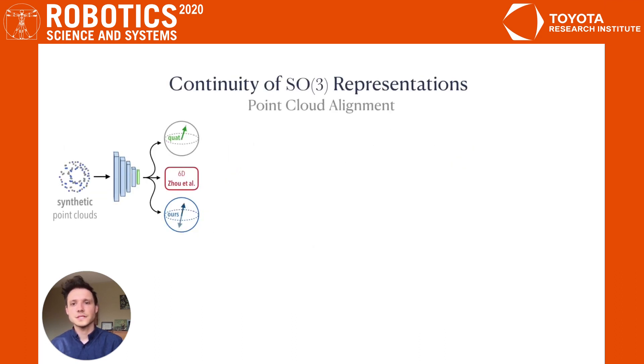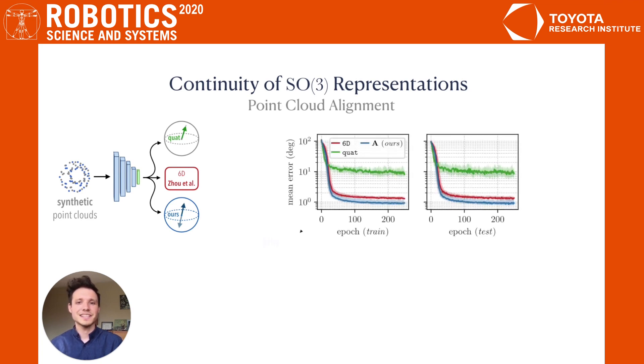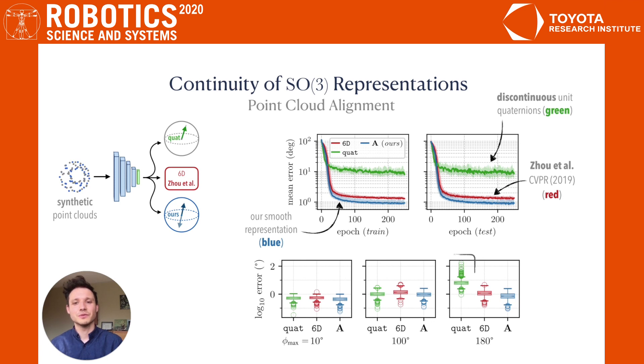To validate the hypothesis that continuity matters for learning, we trained a network to estimate the alignment between synthetic point clouds. Our findings indicate that our representation, shown here in blue, performs comparably to the continuous representation proposed by Zhou et al, and both significantly outperformed the discontinuous unit quaternion formulation, especially when rotations with magnitudes close to 180 degrees are included in training and test data.